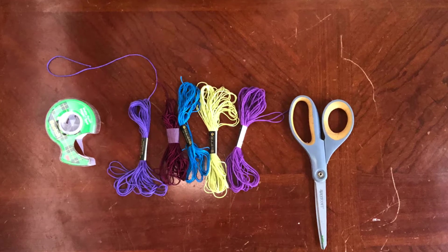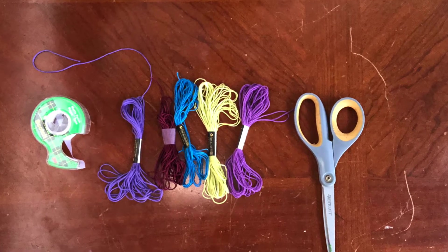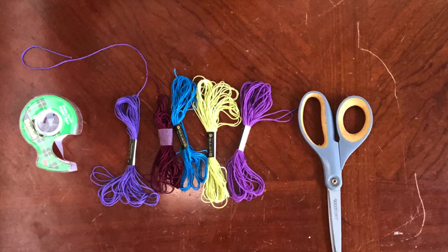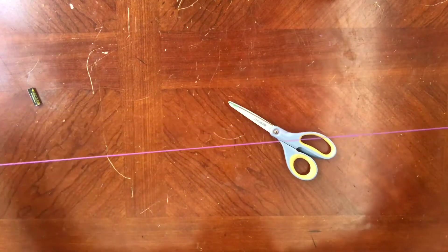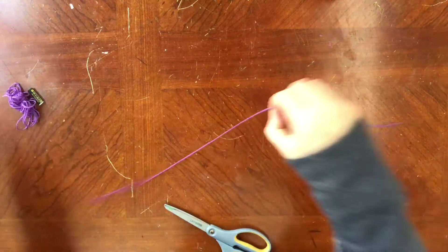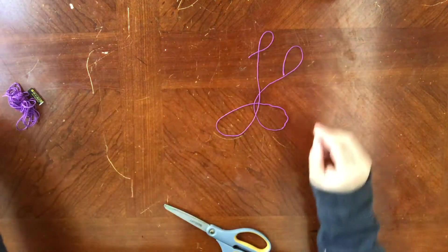Let's start with materials. You need some tape, some string, and scissors. It doesn't matter how many different colors of string you have; it just depends on how thick you want your bracelet. Step one is to cut your string. I usually cut it in about two feet length. It depends on how long you want your bracelet.